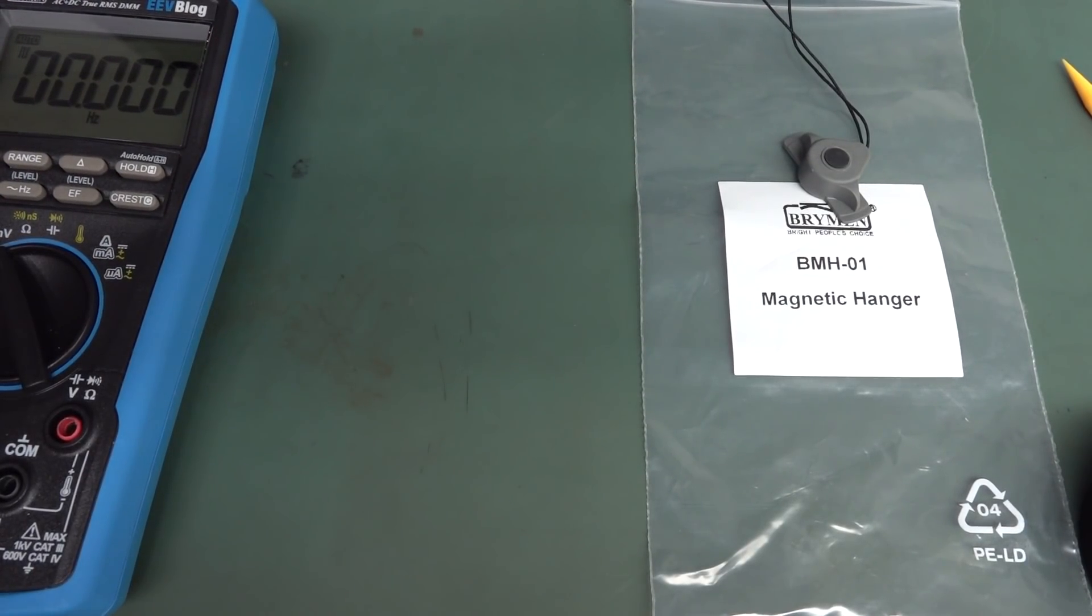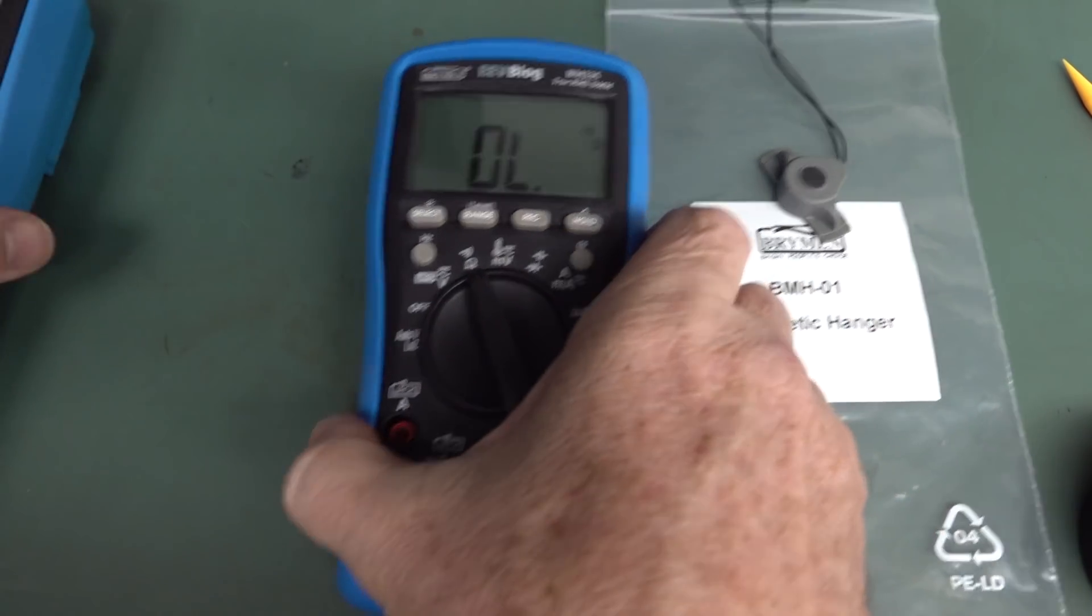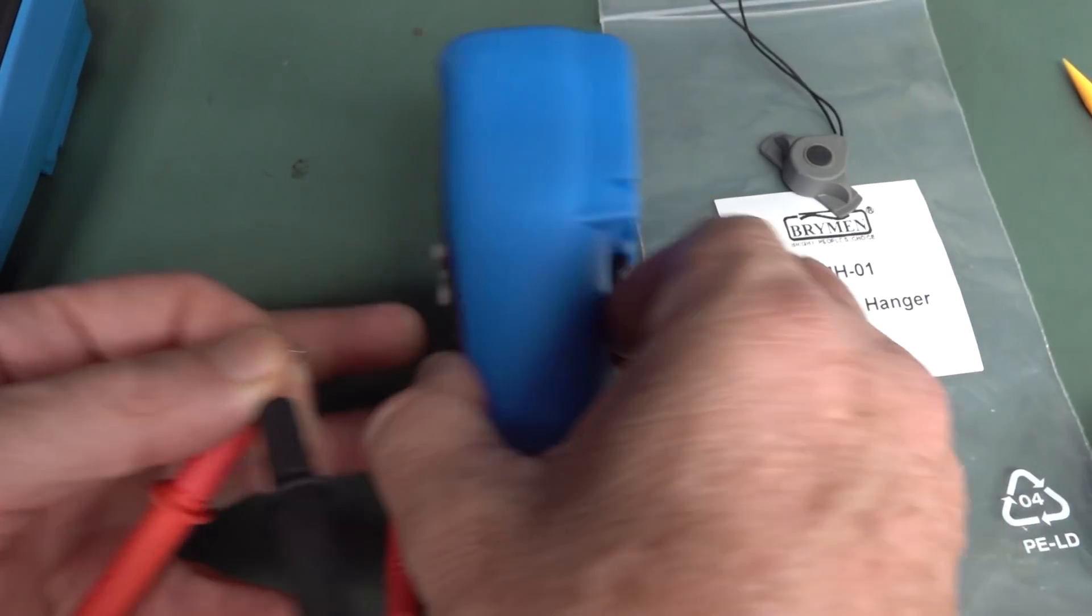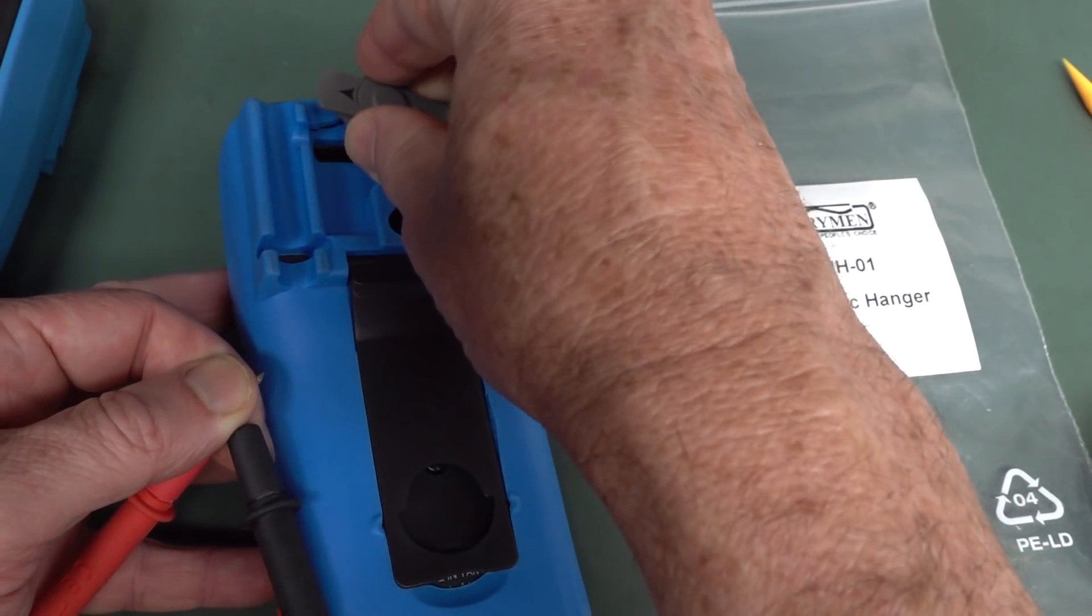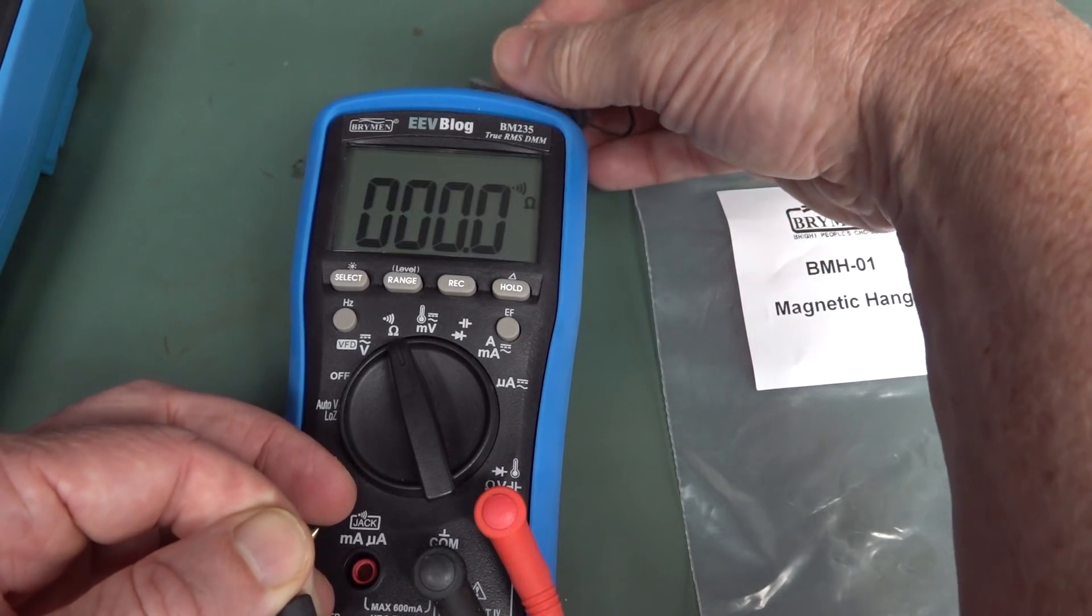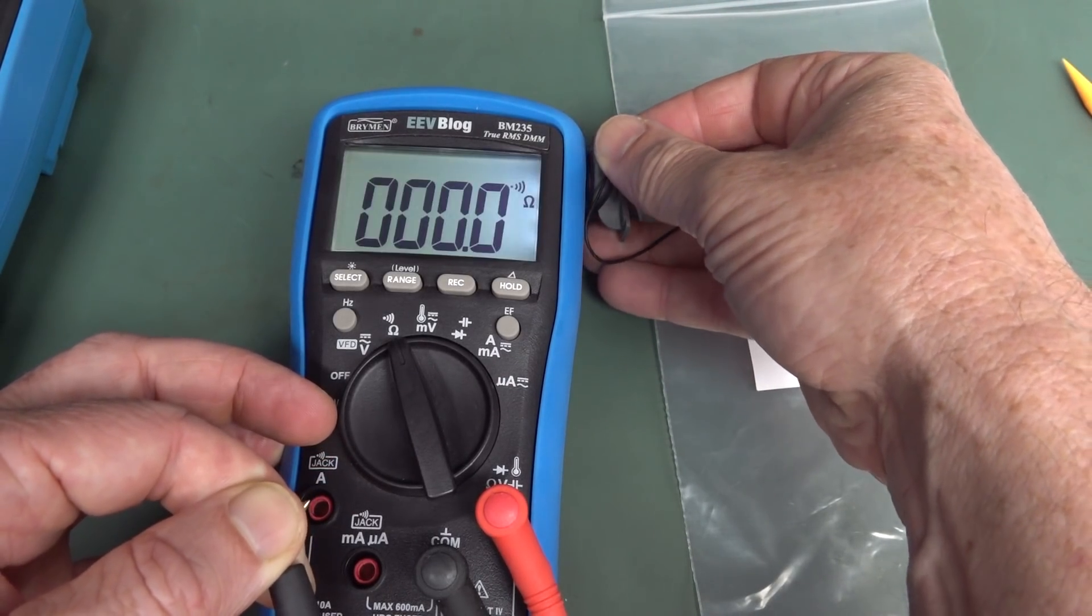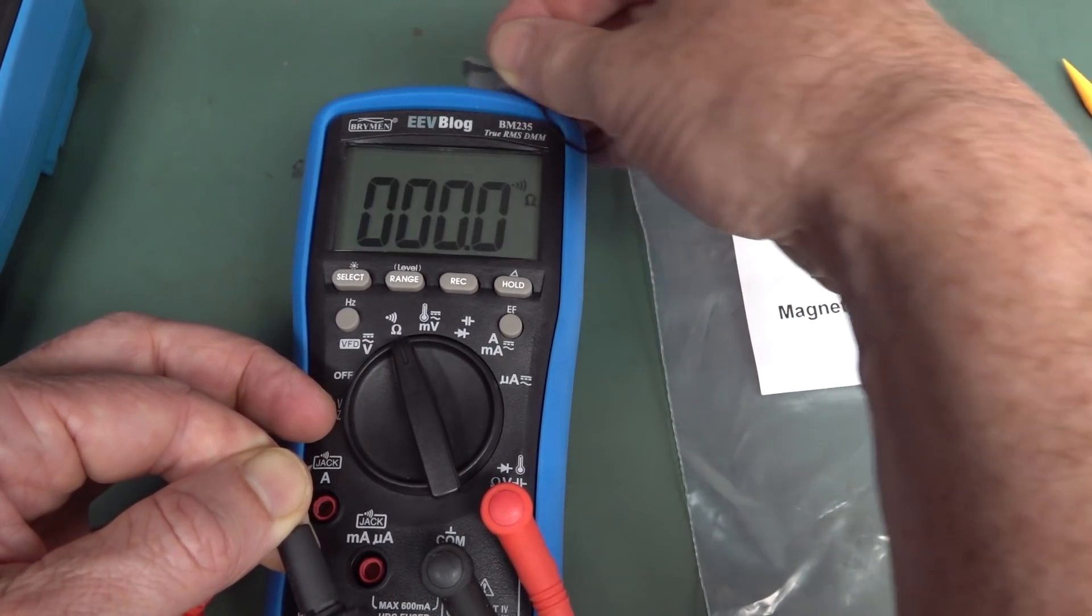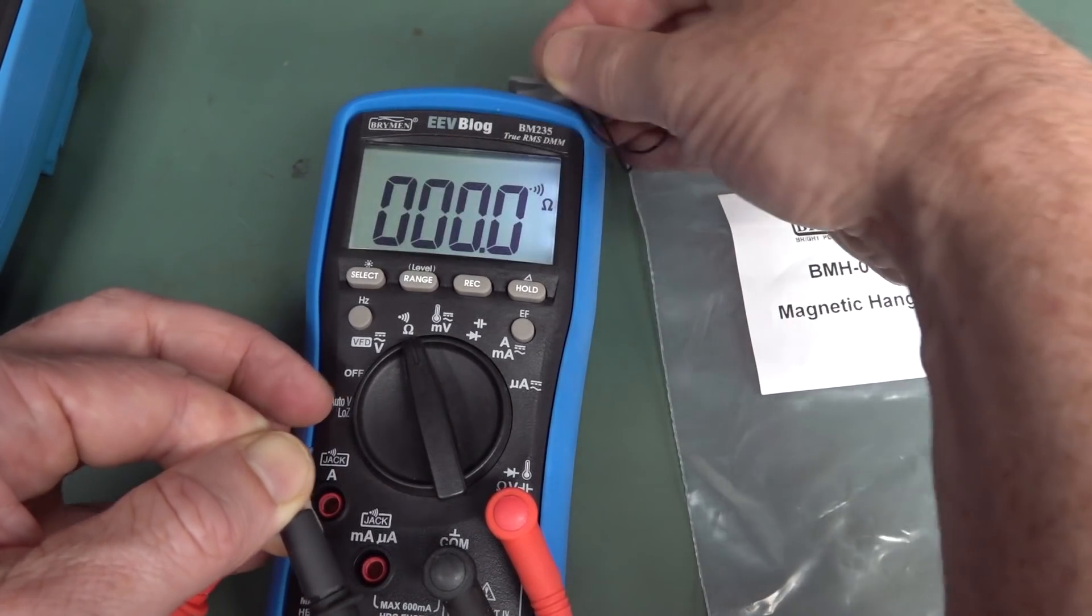Now, I tried to reproduce this on the BM235 here, and I can kind of sort of just get it. It actually doesn't do anything on the back. There's nothing I can actually do on the back to do it, but if I actually go around the side here, I can actually modulate that.